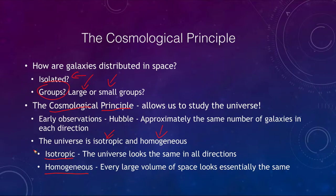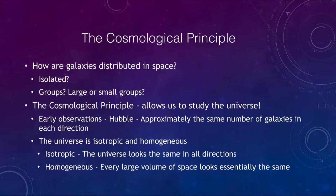Early observations by Hubble showed that approximately the same number of galaxies were found in any direction. As you looked out into space, it didn't matter what direction you looked — you found roughly the same number of galaxies, showing that the universe is isotropic.